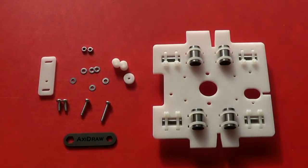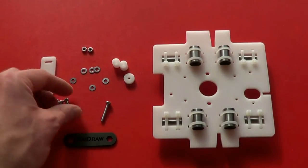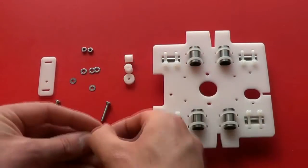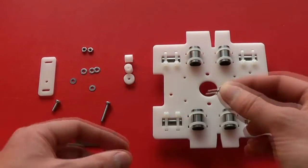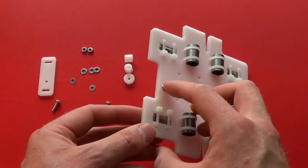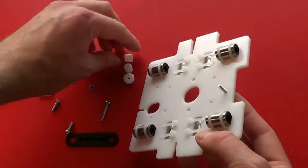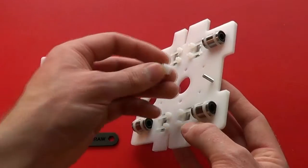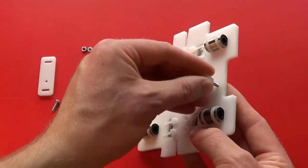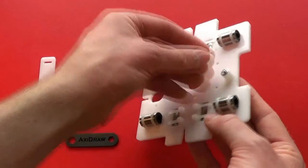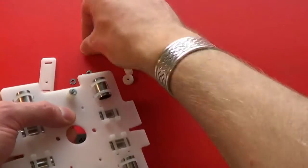So first of all, take the medium screw and a washer and place it through the left anchor post hole on the carriage. Then put on an anchor post with another washer and a nut to finish it off.